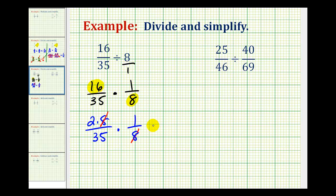Now when we multiply, our fraction will be in simplest form. So we'll have two times one, that's two, and 35 times one is just 35. So 16/35 divided by eight is equal to 2/35.